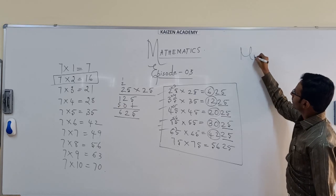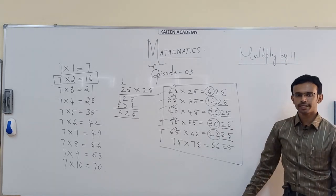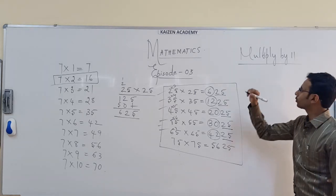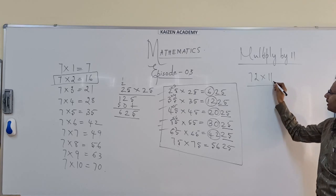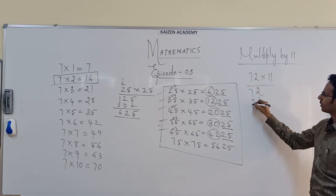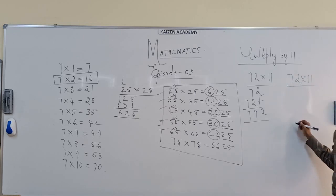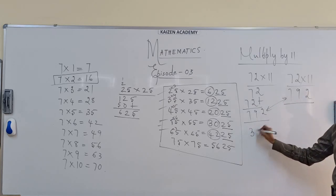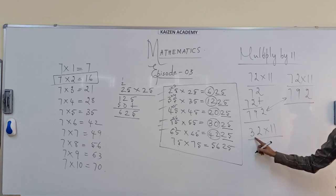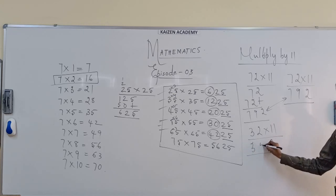Coming to the next shortcut — multiplying any number by 11. There are several chapters in the tenth standard where you will see numbers to be multiplied by 11. How to get the answers quickly: take 72 multiplied by 11. Normally we multiply to get 792. But to get the answer quickly, just write the first and last digits as they are, then add those two digits and put the sum in the middle — giving 792. One more example: 32 into 11 — retain 3 and 2, add them to get 5, put it in the middle: 352.